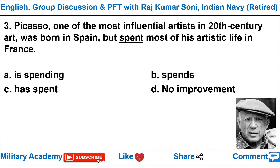Question 3: 'Picasso, one of the most influential artists in 20th century art, was born in Spain but spent most of his artistic life in France.' His artistic life refers to his creative life as an artist. Since we are quoting a past incident, 'spent' is the correct verb — not 'is spending', 'spends', or 'has spent'. So the correct option is D: No Improvement. The sentence is grammatically correct.